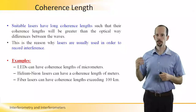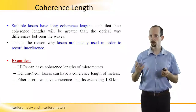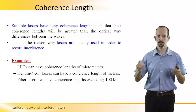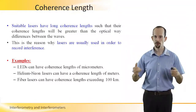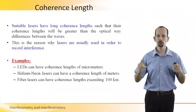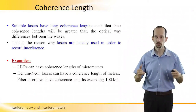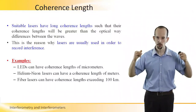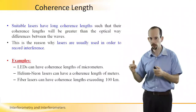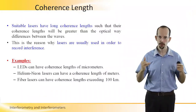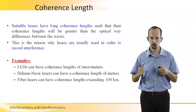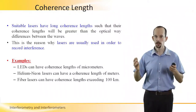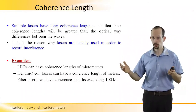Suitable lasers have coherence lengths which are long enough to create interference. Long enough means that the optical path difference between the two waves creating the interference must be shorter than the coherence length of the source. In order to create interference, we have to satisfy this rule: the two waves must have an optical path difference shorter than the coherence length. This is the reason why lasers are usually used to record interference, because their coherence length is long enough.